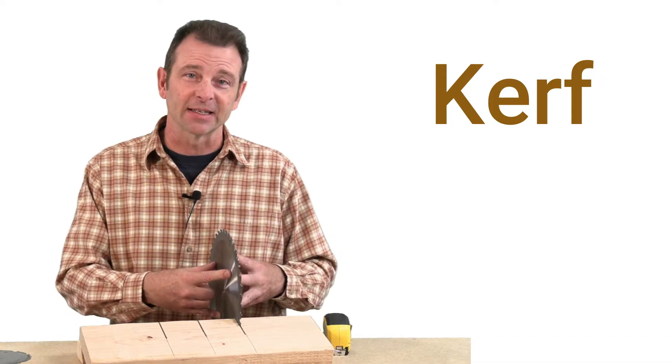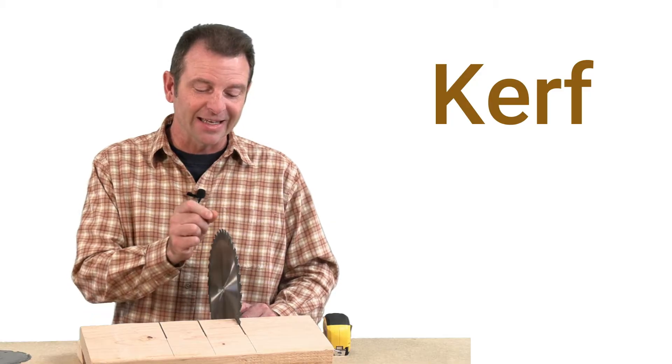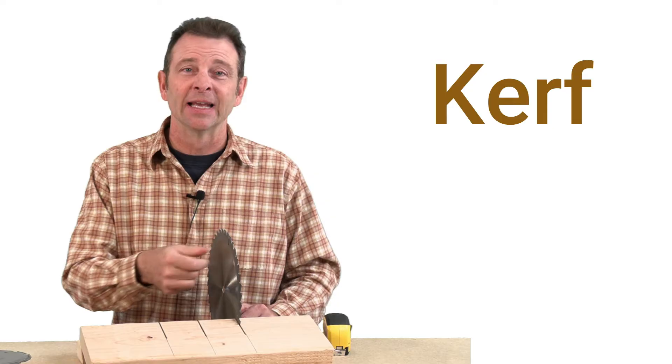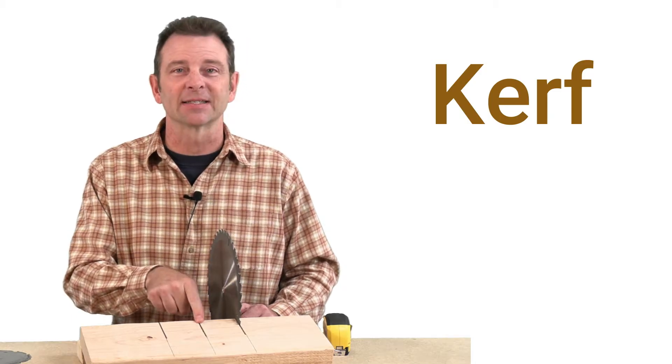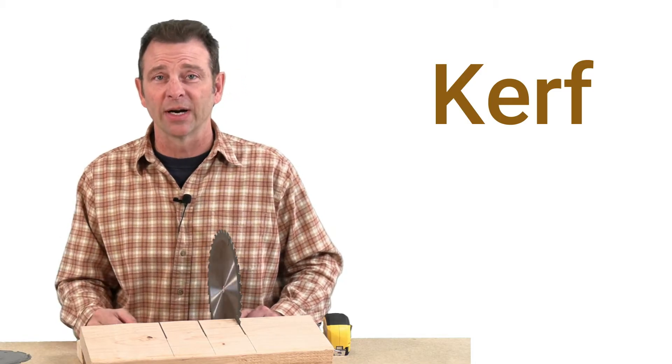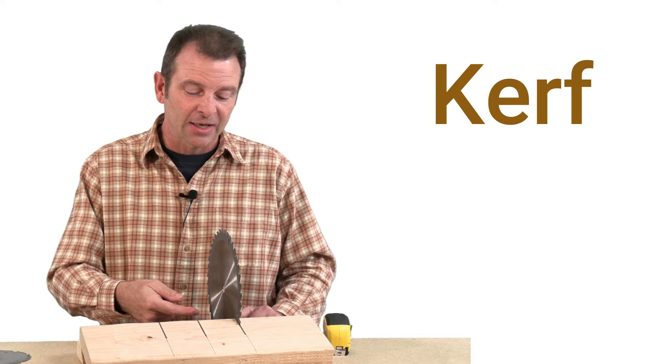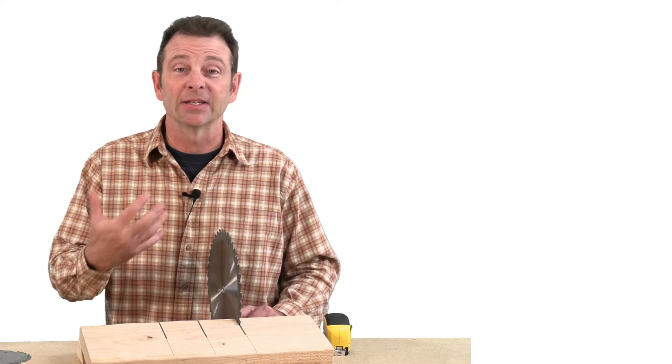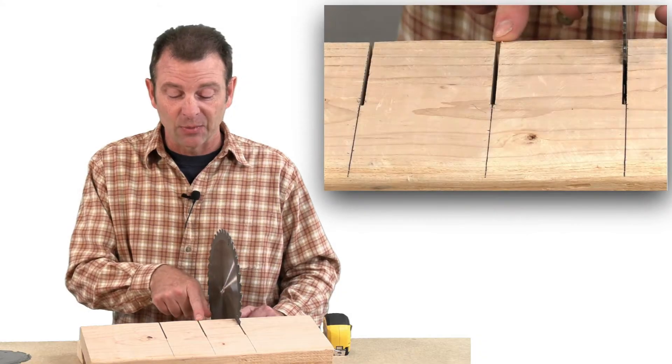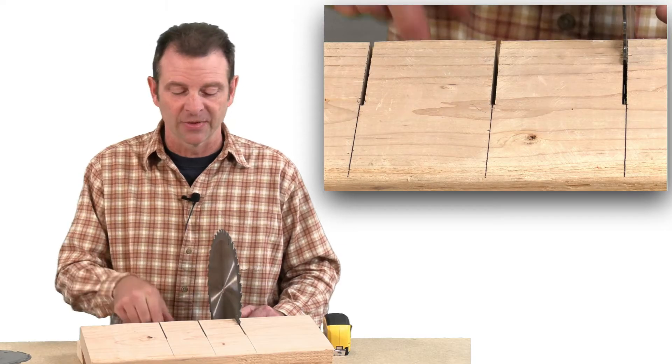Every blade has a thickness to it and your kerf is going to be the exact width of your blade. As that blade is spinning or moving through the material, it's cutting a slot. If you ever wondered where sawdust came from, it is what is produced from this blade moving through this material. It turns that material into dust and what you're left with is this slot which we call kerf.